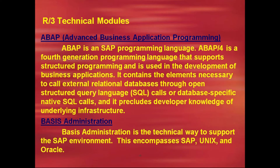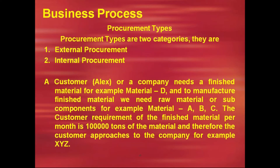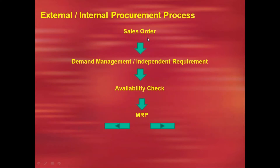Now we'll discuss the business process — this is very important. Whatever the nature of the business, procurement types are classified into two categories: external procurement and internal procurement. Say a customer needs a finished material D, which is the result of raw materials A, B, C. To produce D, you need A, B, and C. The customer approaches company XYZ, requiring 1,000 tons of the material. The relation between the customer and the company is a sales order.